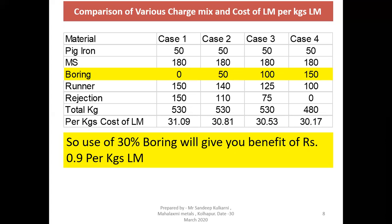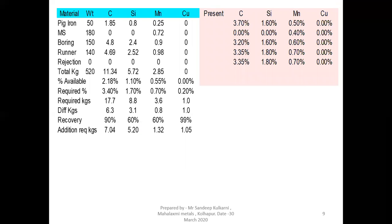Another important factor is using the same grade of risers — particularly higher grade risers — for the same grade of casting production. The runner risers or rejections being used have 0.0% copper. So we are not using FG 300 grade risers for FG 300 grade production. We are using lower grade risers, which requires almost 1.05 kg of additional copper.